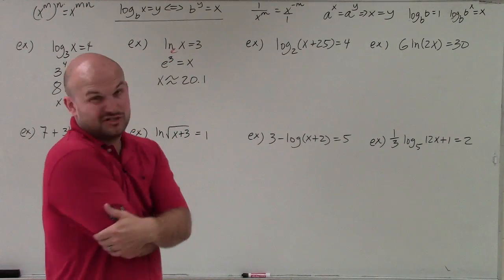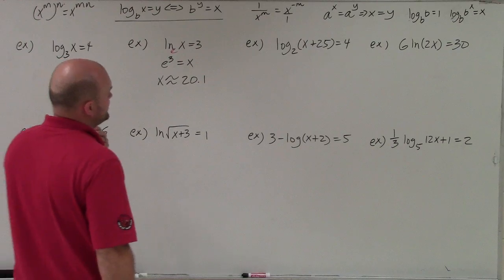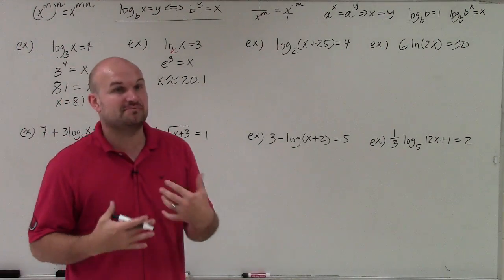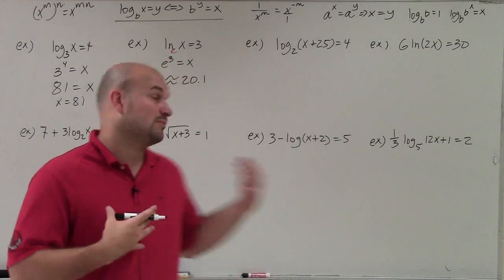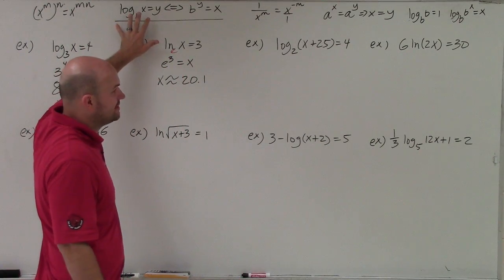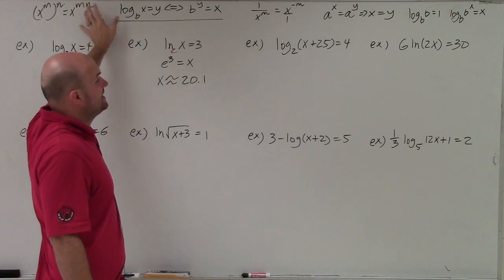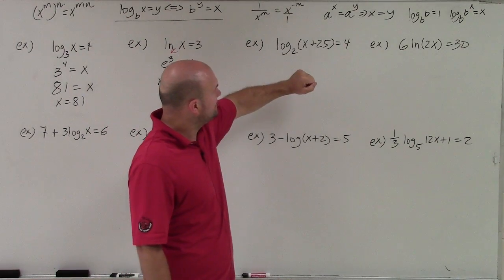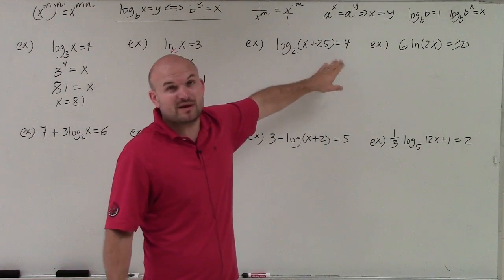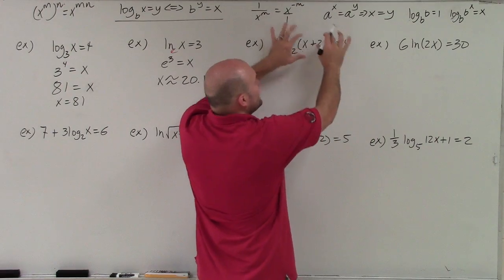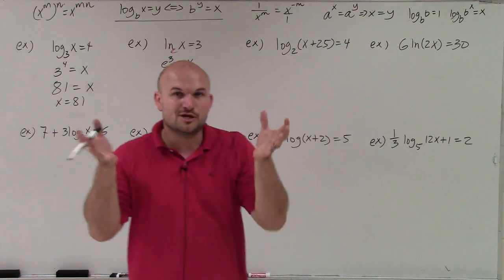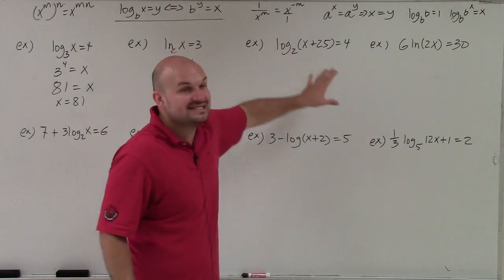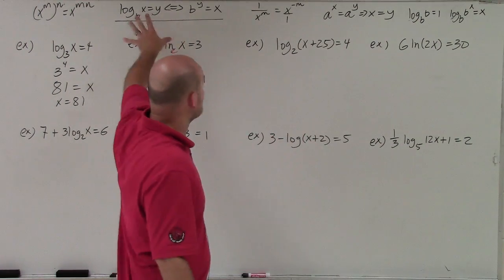Now we have some expressions to work through. The main important thing I want to drill home: when solving a logarithmic equation by converting to exponential form, we have to have the logarithm isolated. The logarithm cannot be adding, subtracting, multiplying, or dividing by any number. In this case it might look like you're adding 25, but that's inside the function — inside the parentheses — so that's OK. The function is isolated.